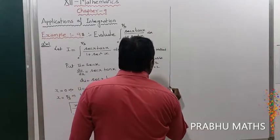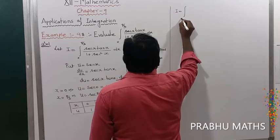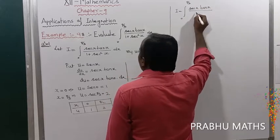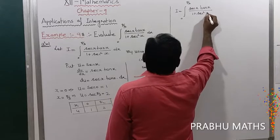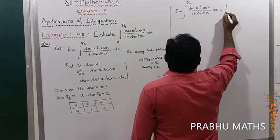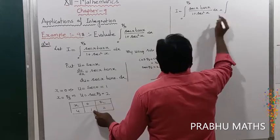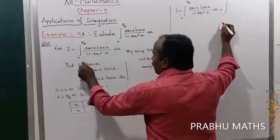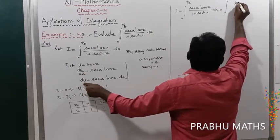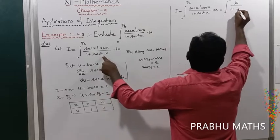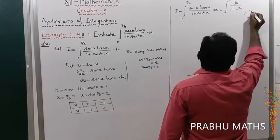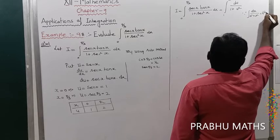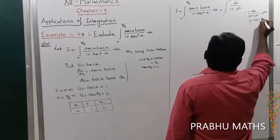Replacing the values: the given function I equals integral from 0 to π/3 of sec x tan x divided by 1 plus sec² x dx becomes the integral from 1 to 2 of du divided by 1 plus u². The formula for integral of dx divided by a² plus x² equals (1/a) tan⁻¹(x/a).